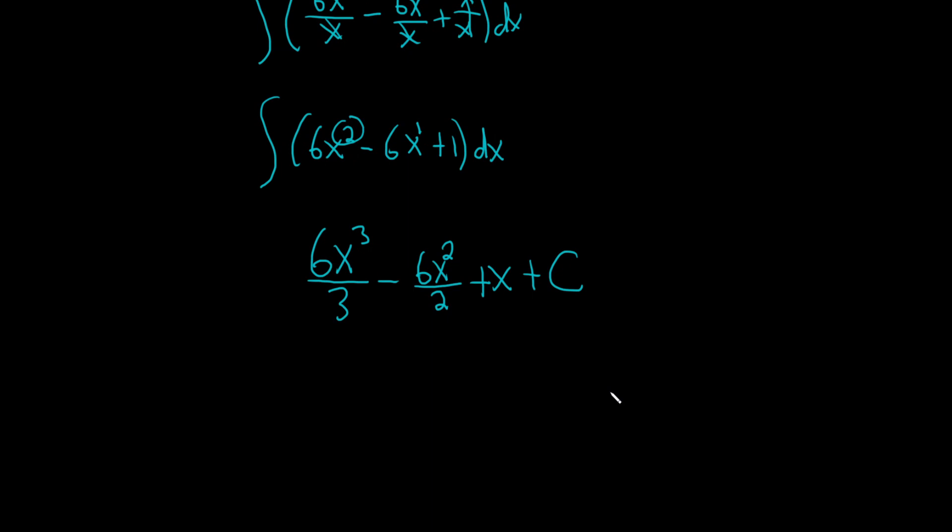Last thing to do is clean up what we have. 3 goes into 6 two times. This is 2x cubed minus, and then 2 goes into 6 three times, so 3x squared plus x plus capital C. And that would be our final answer.